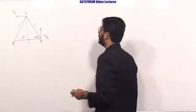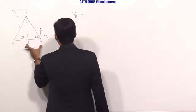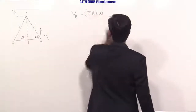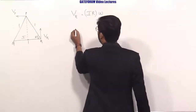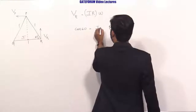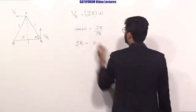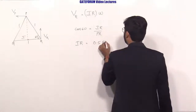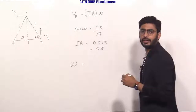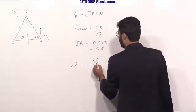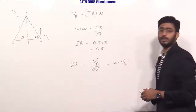VR equals IR times Omega. To find IR: cos(60°) = IR / PR, so IR = 0.5 × PR = 0.5 × 1 = 0.5. Therefore, angular velocity Omega = VR / 0.5 = 2VR. This matches option D.